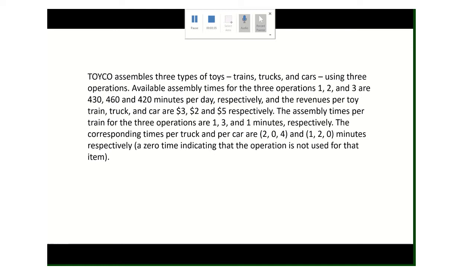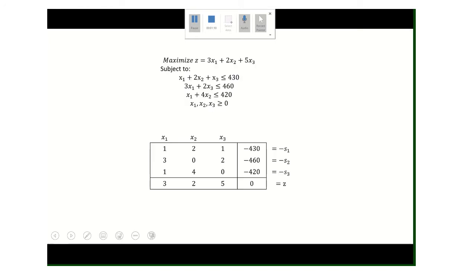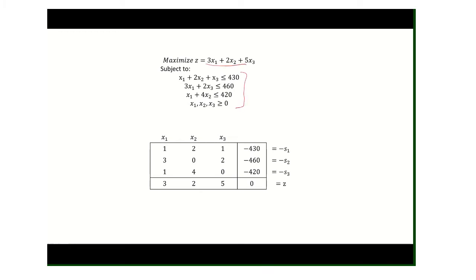We're going to work with this linear program. We have a company that assembles three types of toys using three operations, different assembly times for the three operations, only so much time available, different profits for the different products, and the assembly times required for each of the processes. This is a pretty standard linear program, so hopefully you should be able to put it into linear program form now. When you do that, you will get this: maximizing that equation subject to three constraints with everything being greater than or equal to zero, put into that tableau.